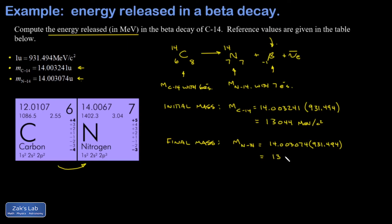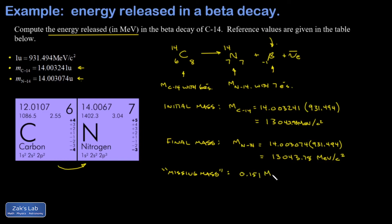I realized I needed more precision in the mass of C14, so I went back and fixed that. For N14 the value is 13,043.78 MeV per c squared, and for C14 it's 13,043.93 MeV per c squared. Taking the difference gives the missing mass: 0.151 MeV per c squared.